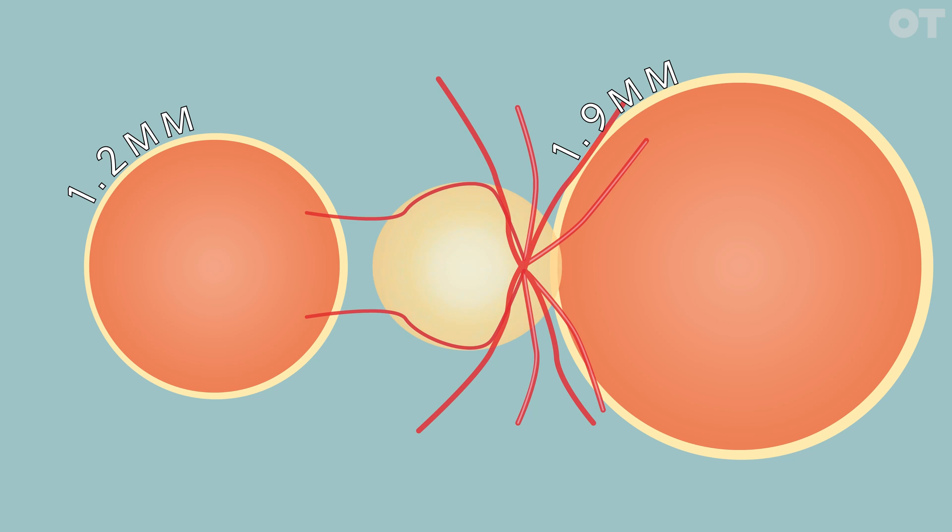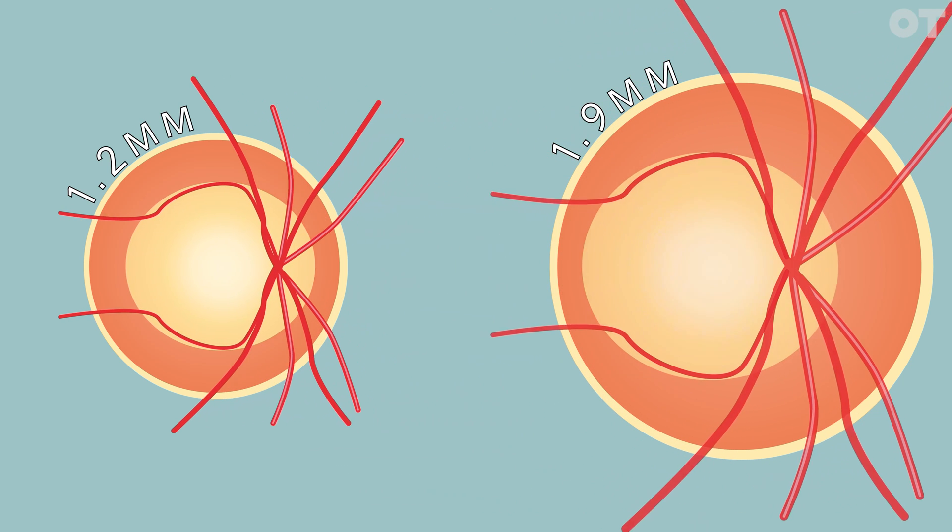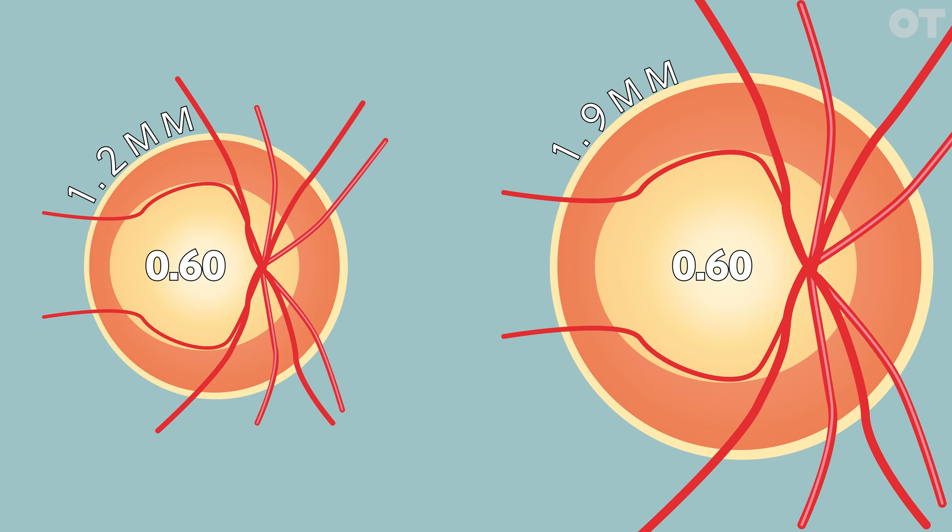So, the size of the disc will adjust how concerned you should be about a CD ratio. A smaller disc with a large cup is more likely to be abnormal than a large disc with a large cup.